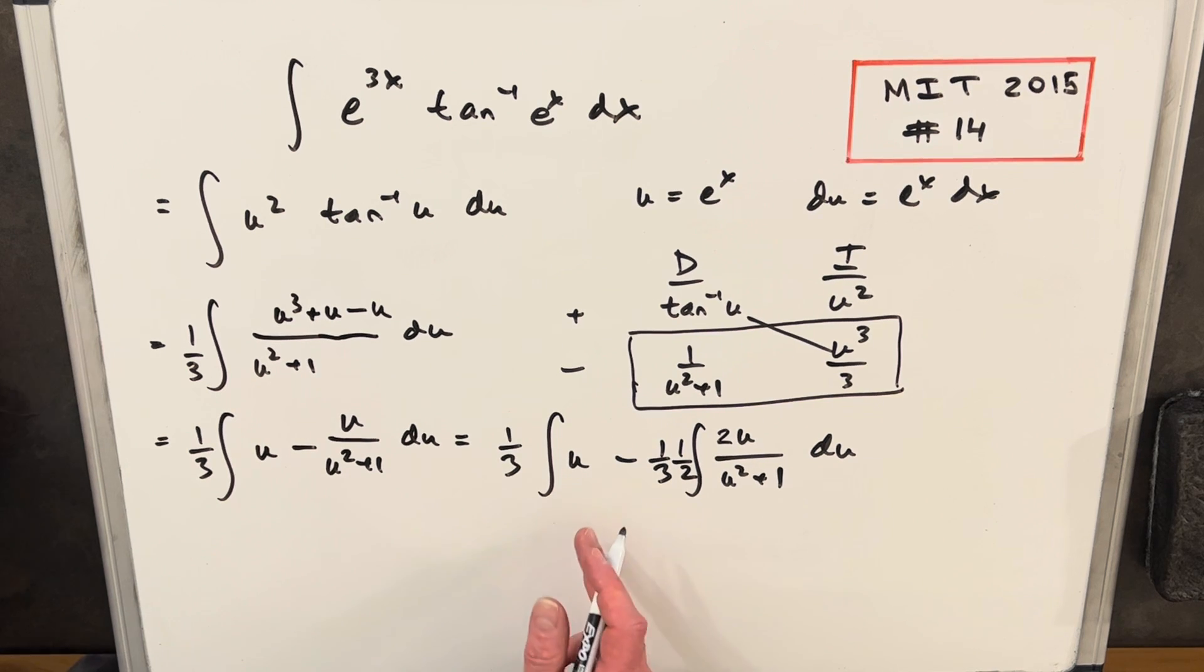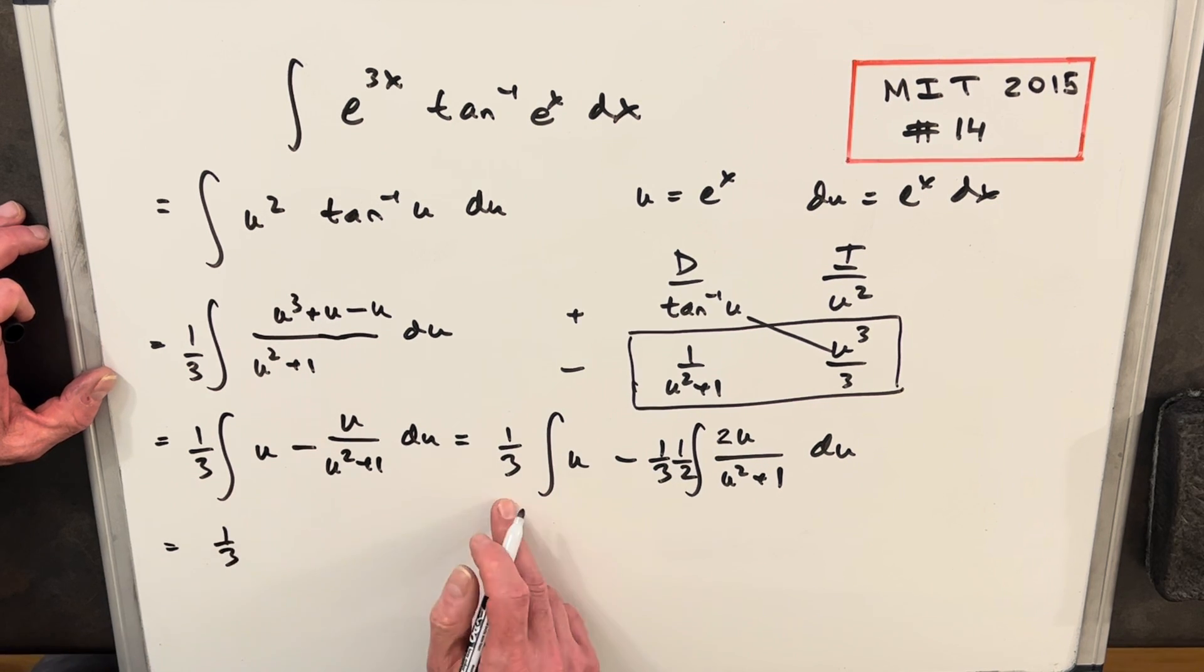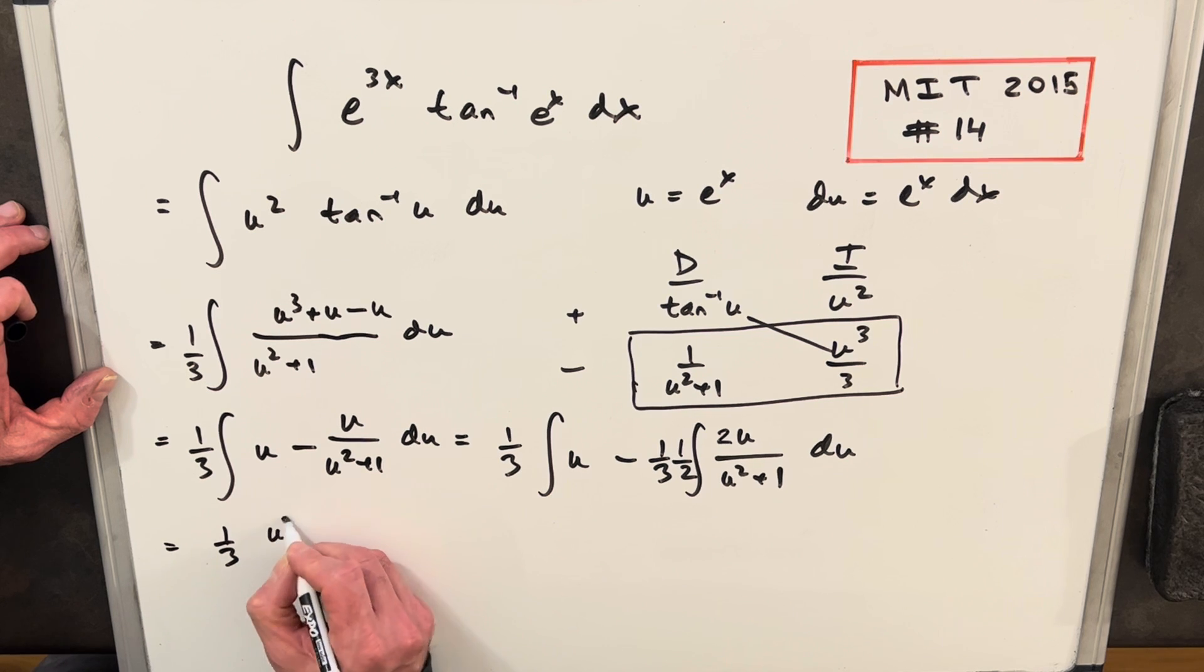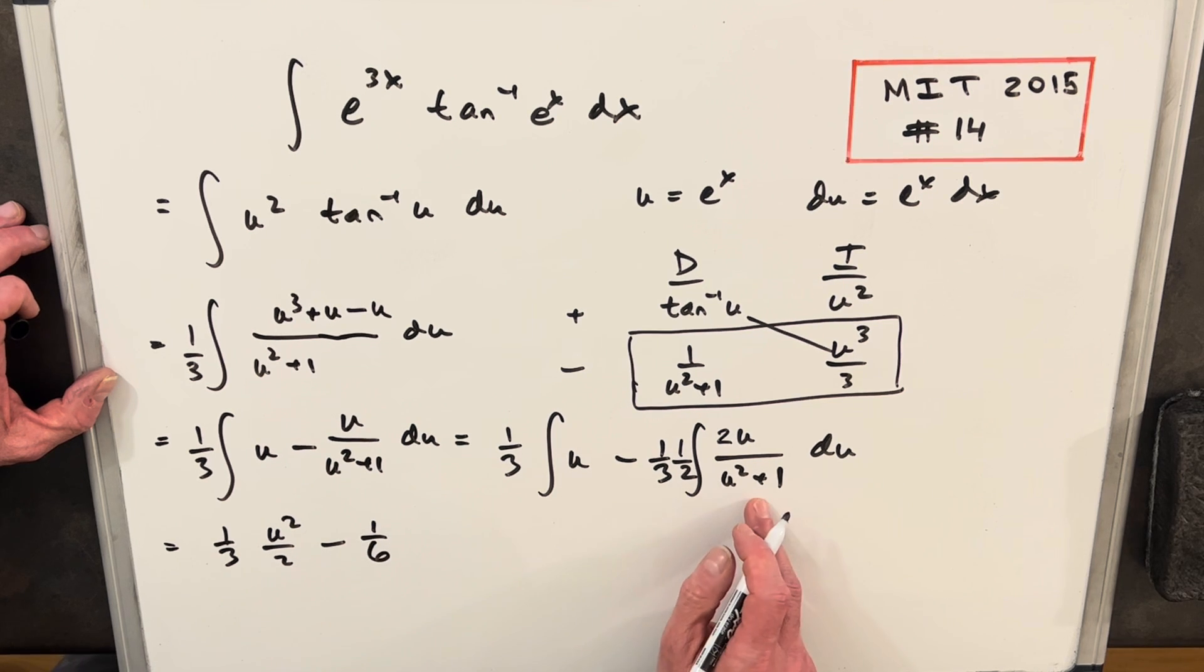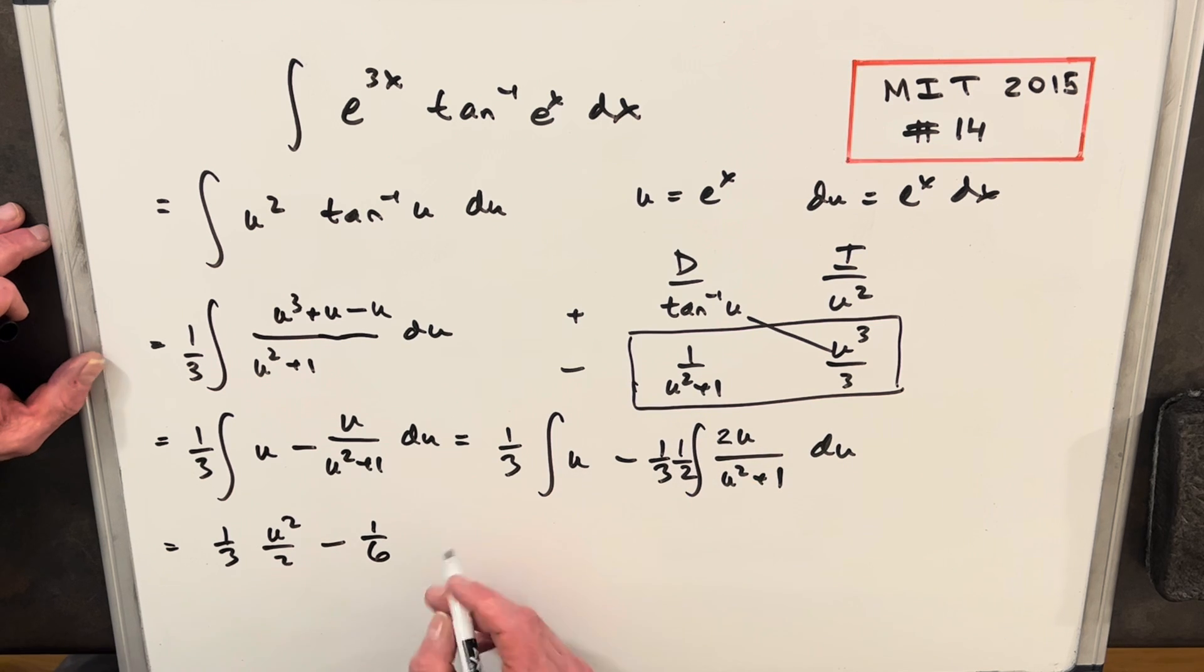And then I think we can finish this off, or at least integrate this piece. So we're going to have 1 third integral of u is going to be u squared over 2 minus—we're going to have a 1 sixth in front, multiplying the 1 third and a half. And then this is just going to be—because the top numerator is the derivative—this is going to be natural log of u squared plus 1.